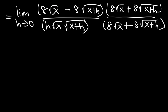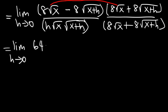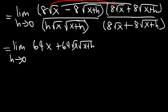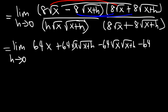Let's FOIL on top. 8 square root of x times itself: 8 times 8 is 64, and square root of x times square root of x is x. Next we have 8 times 8 which is 64, and then square root of x times square root of x plus h. And then we have the two middle terms — this is going to be negative 64 times square root of x times square root of x plus h. And finally negative 8 times 8 is negative 64, and square root of x plus h times itself is just x plus h.